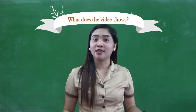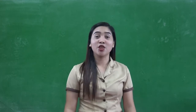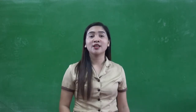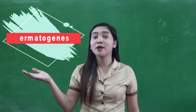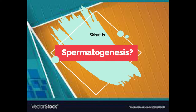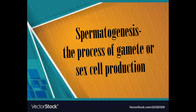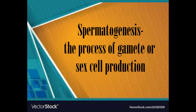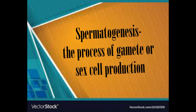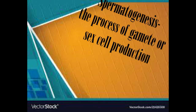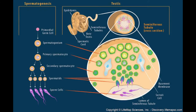What does the video show? The video shows the process of spermatogenesis. What is spermatogenesis? Spermatogenesis is the process of gamete or sexual reproduction among male animals, including humans. This process occurs in the male reproductive organs called testes. Spermatogenesis is the production of sperm by the process of meiosis. It takes place in the seminiferous tubules of the testes. The entire process takes about two months.